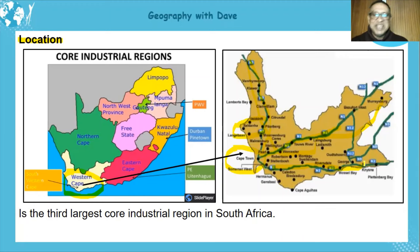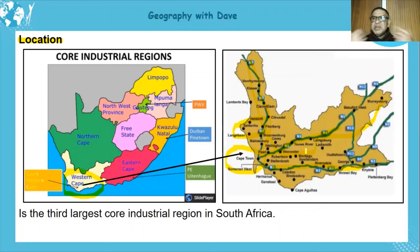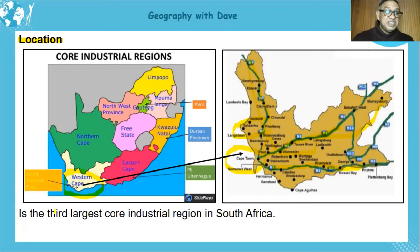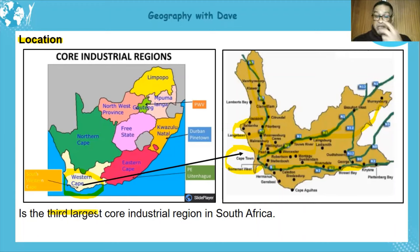These are already little hints of factors favoring this area. You would have done general things about core industrial areas in my previous presentation, so I won't repeat that. Focus on the PWV and the southwestern cape for your prelim and final exam. The southwestern cape is the third largest core industrial region in South Africa after the PWV (Gauteng) at number one, then Durban-Pinetown, then the southwestern cape — a big contributor to South Africa's economy.